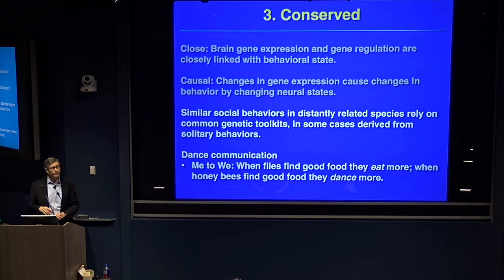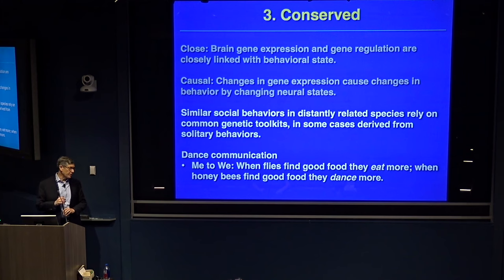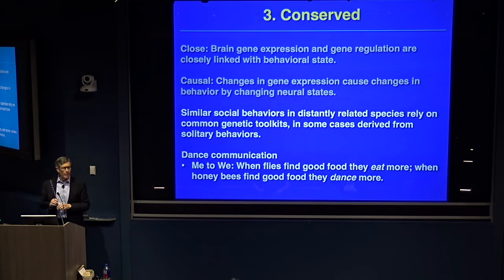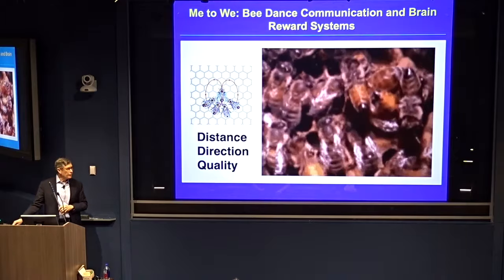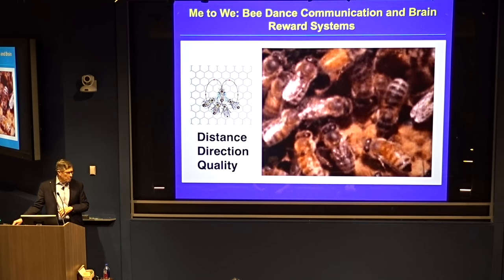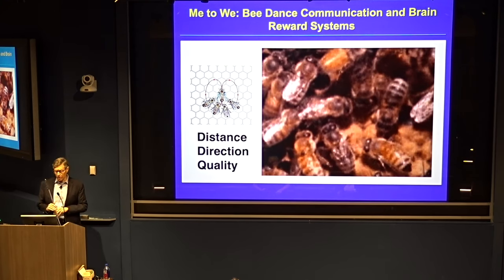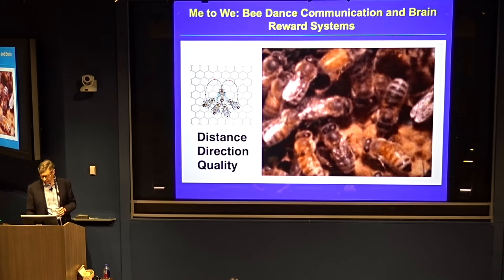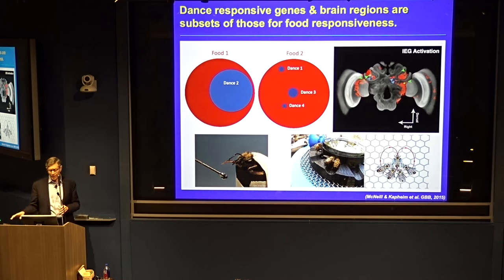For dance communication: when flies find good food, they eat more. When honeybees find a good, rich nectar source, they come back to the hive and dance more. They use a communication system that communicates distance, direction, and quality. As far as we know, honeybees are the only species with what some argue is a symbolic language to communicate this information. We studied this system by comparing me bees to we bees.